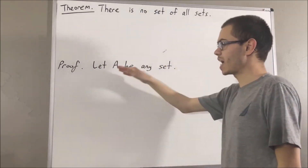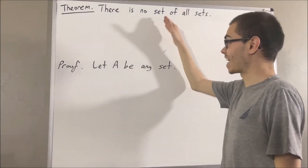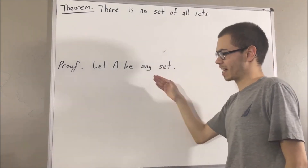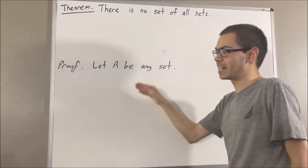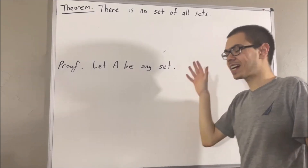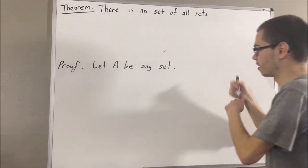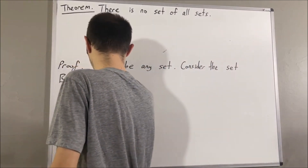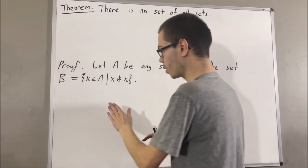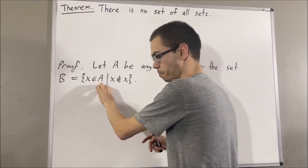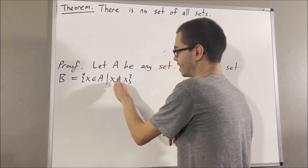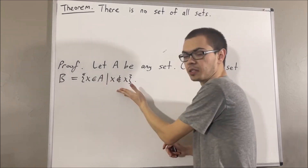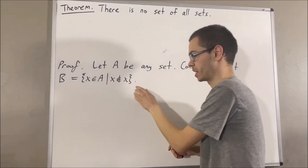From here, we want to show that A is not a set of all sets. So we want to find a set that is not contained in A. The idea is we consider the following set: the set of elements x in A with the property that x is not an element of x. This set exists because of the axiom of specification.